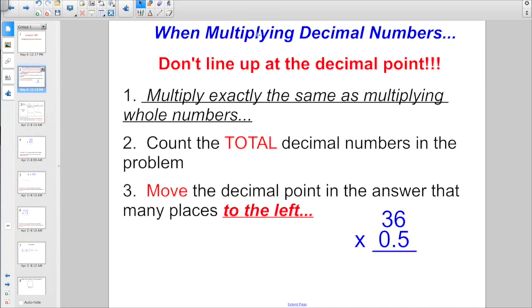The big thing to know when you're multiplying decimal numbers, don't treat it like adding or subtracting. You don't line up at the decimal point. First step, multiply exactly the same as if you were multiplying whole numbers. Then you want to count the total number of decimal numbers in the problem. Then you want to move the decimal point in the answer that many places to the left.